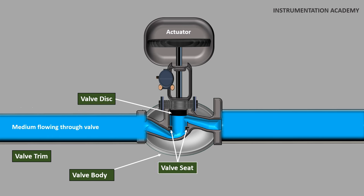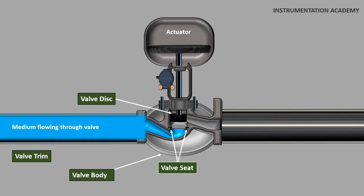The valve disc is the part which allows the valve to throttle or stop flow depending on its position. The valve body and the valve seats creates a seal to stop the flow. Some control valves have one seat while some others have multiple seats.